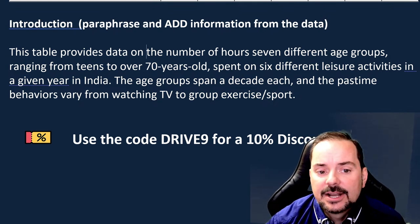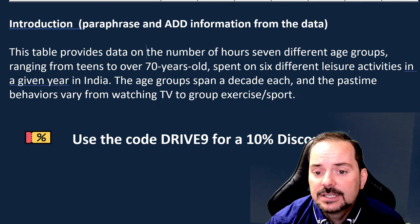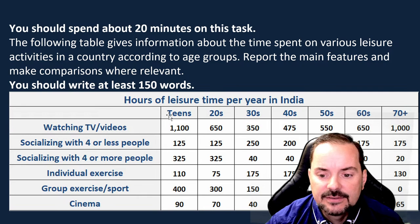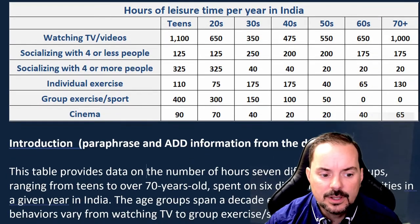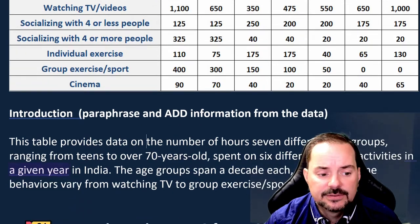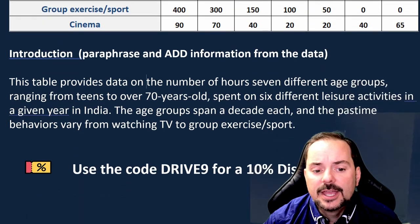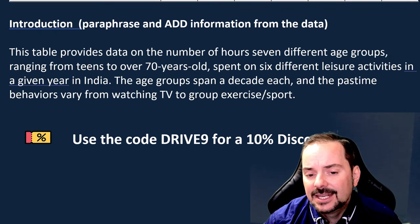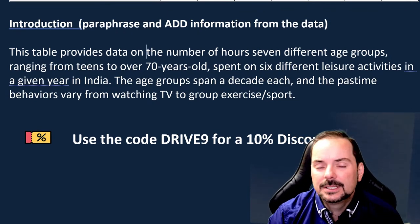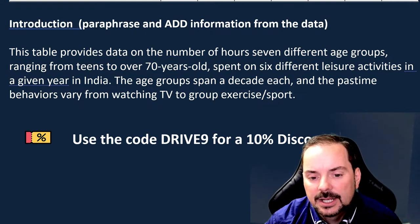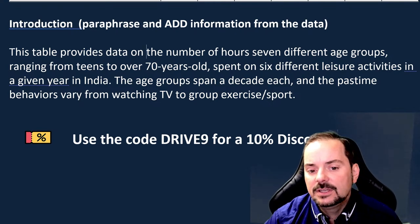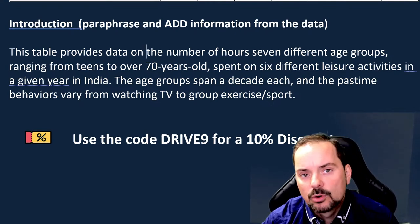So: 'This table provides data on the number of hours seven different age groups — because there are seven: teens, 20s, 30s, 40s, 50s, 60s, and 70 plus — ranging from teens to over 70 years old, spent on six different leisure activities in a given year in India. The age groups span a decade each roughly, and the pastime behaviors vary from watching TV to group exercise and sport.' Now we have a clear introduction for our reader.